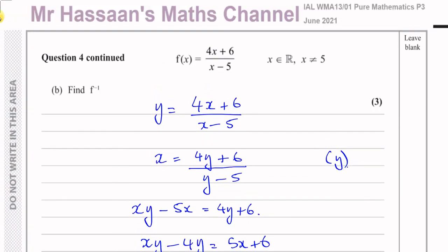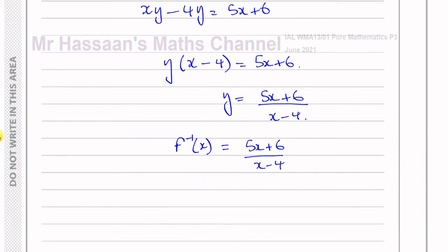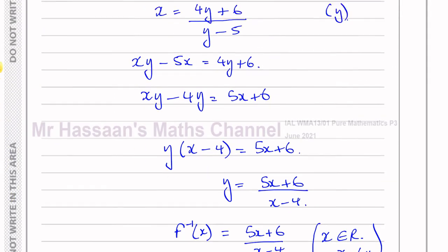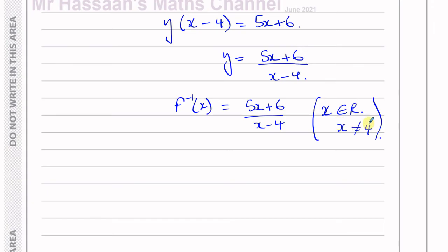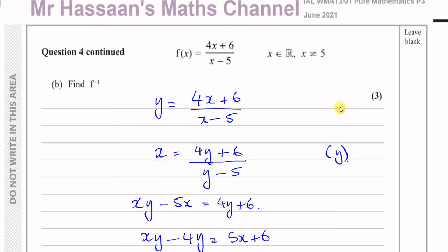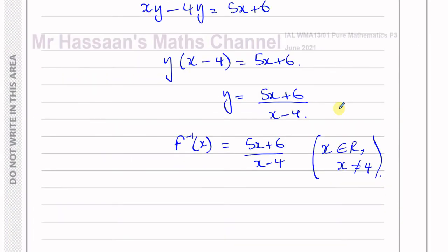The original function f is not restricted apart from its asymptote, so the inverse function is also defined for all real numbers except its asymptote, which is when x = 4. So x ≠ 4 should be written as a condition for the domain. That's the answer to part B.